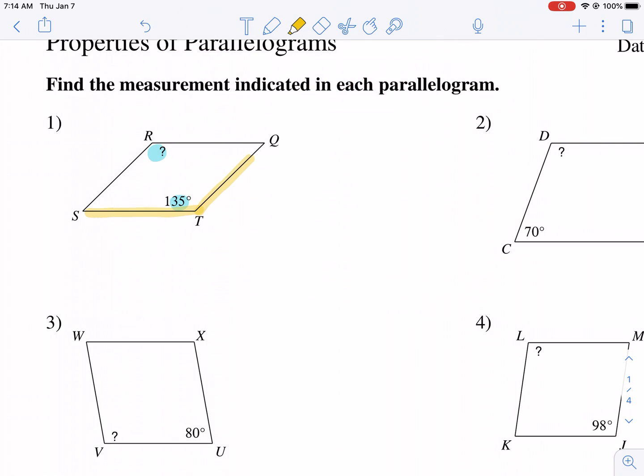this angle T has sides ST and QT, and it does not share either of those sides with R. R is kind of off by itself on the opposite side, so the easiest way to think is if I could travel across the parallelogram, that's the opposite angle.